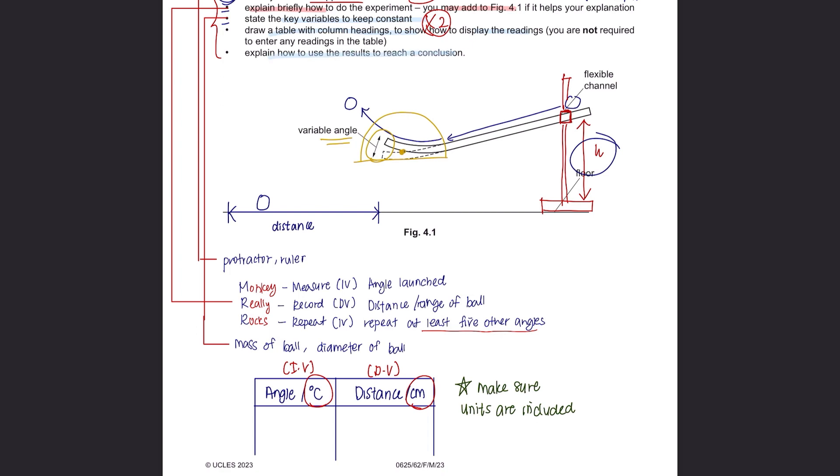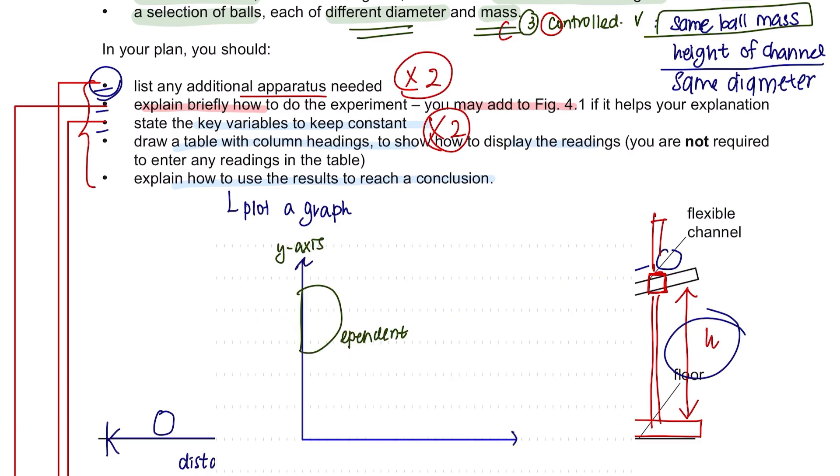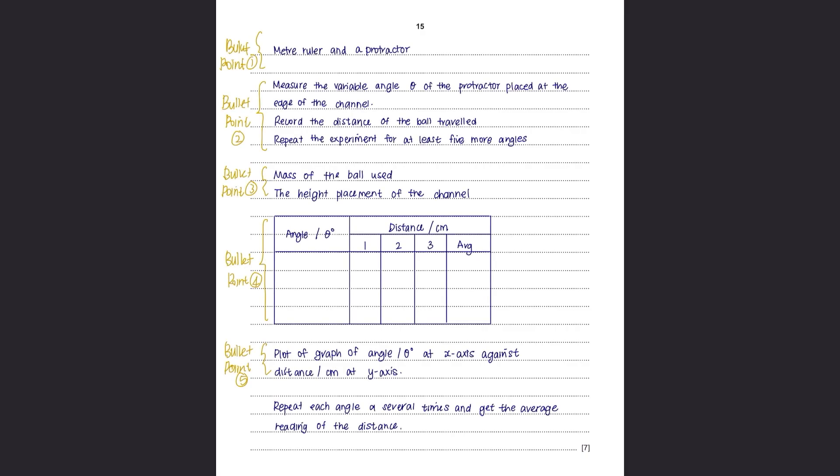And lastly, explain how to use the results to reach a conclusion. A common way to answer this is by plotting a graph, but you have to mention which variable goes to which axis. When plotting a graph, on your y-axis, you will write your dependent variable, and your x-axis, you will show your independent variable. And this is how I like to remember them in case I forget. Now we can write all our points into our answer space. I've only written it this way to show you each bullet point. In your exams, make sure you write your answers in a paragraph form.